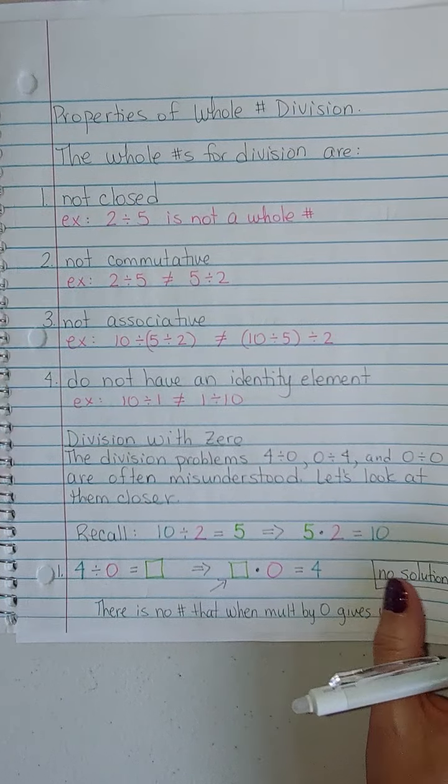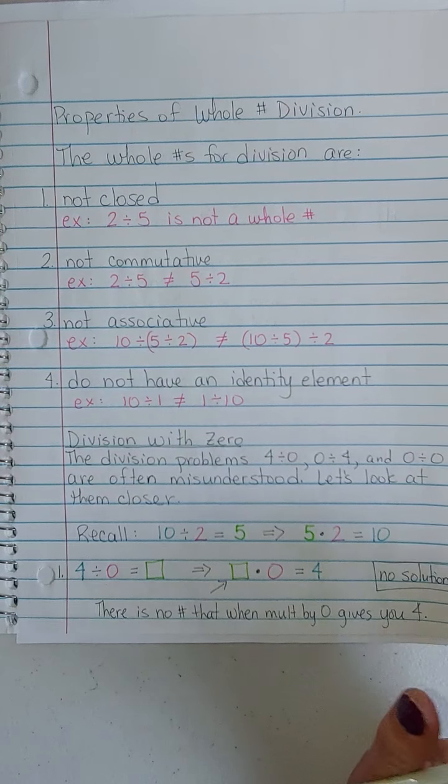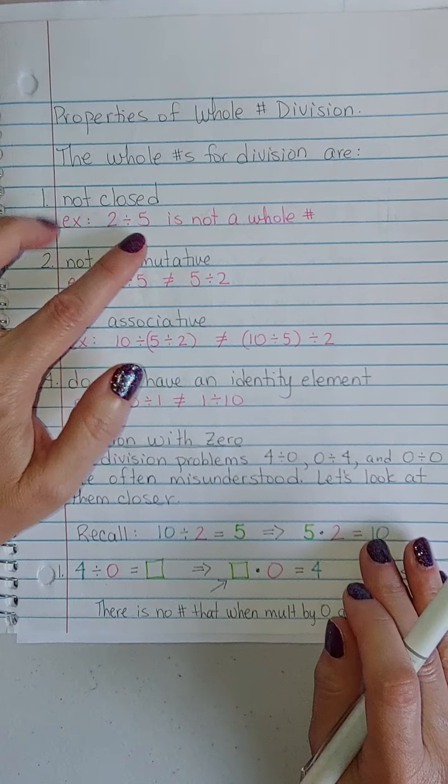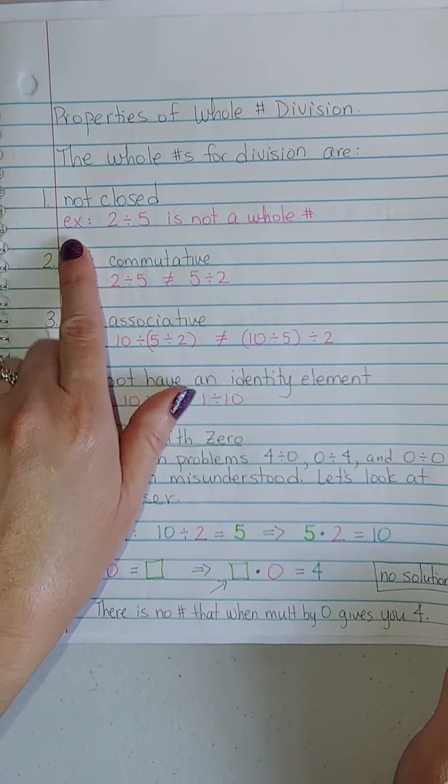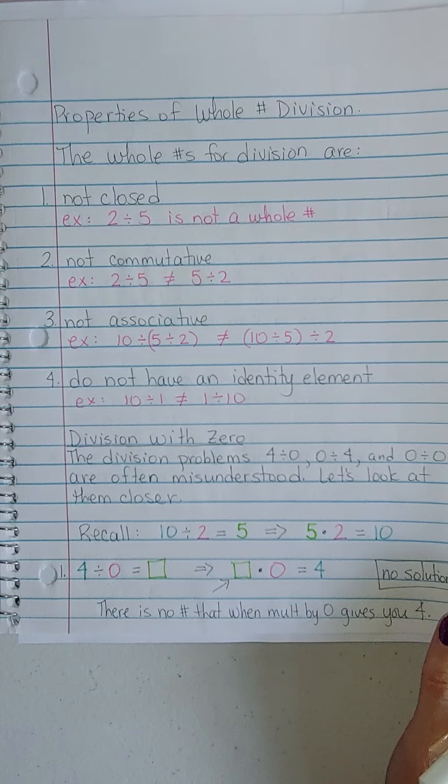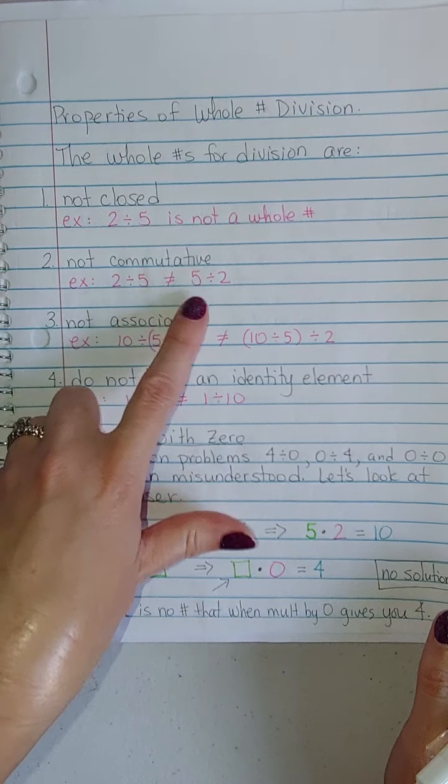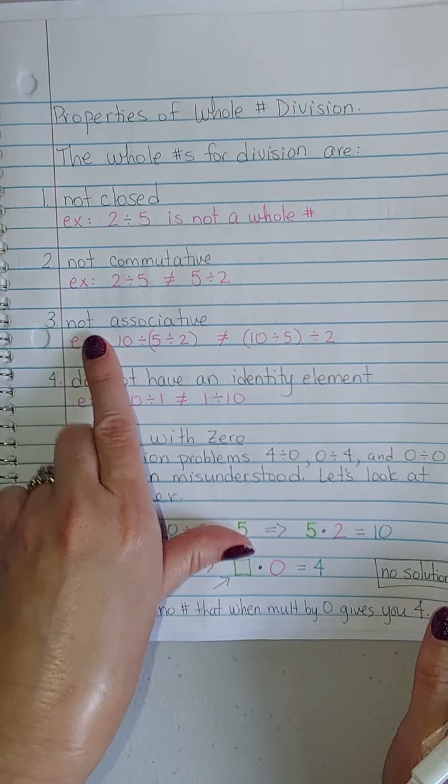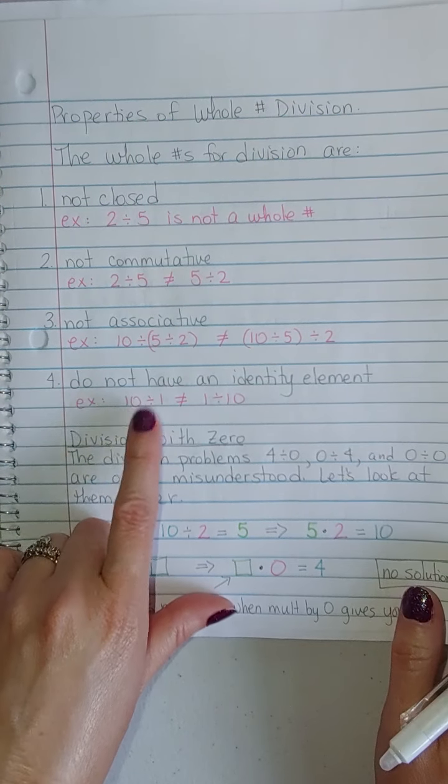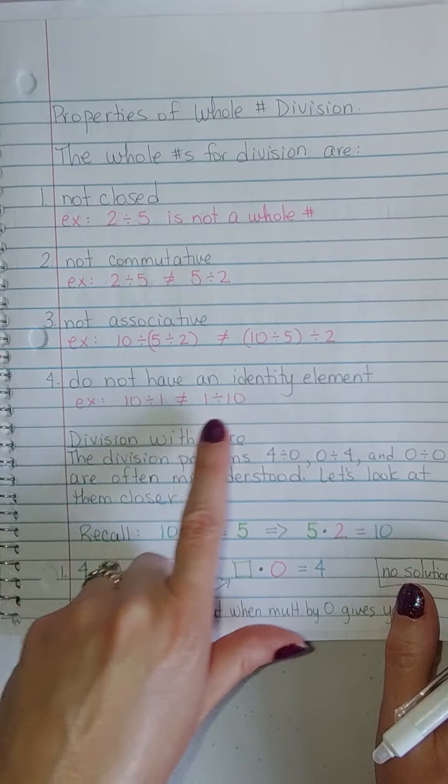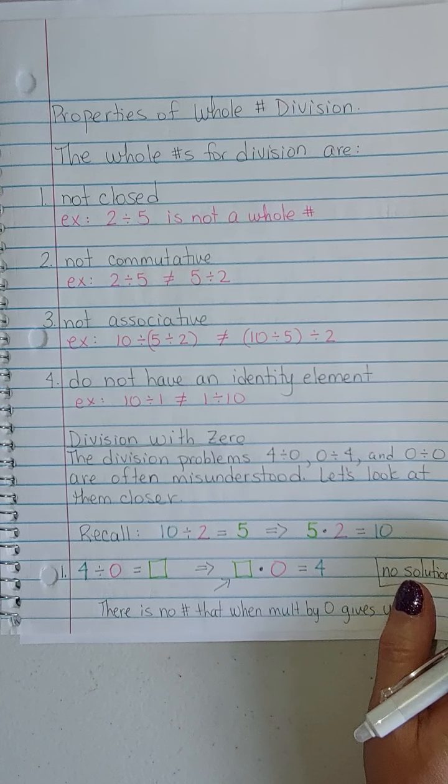The properties of whole number division are going to be similar to the ones for subtraction, in that there's not any. The whole numbers for division are not closed because you cannot divide any two whole numbers and always get another whole number. 2 divided by 5 is not a whole number. Whole number division is not commutative. It is not associative. And it does not have an identity element. Yes, that one is 10, but the identity element requires that it work both ways.